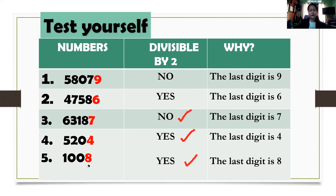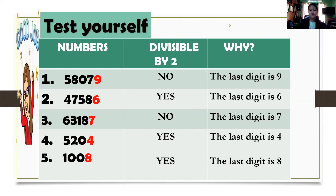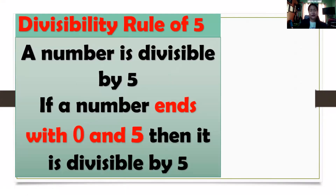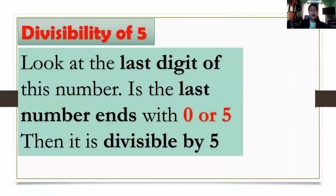Let us now proceed to another divisibility rule. Let's go to the divisibility rule of 5. A number is divisible by 5 if it ends with 0 or 5. For example, 195 — does the last digit end with 0? No. How about 5? Yes. So, 195 is divisible by 5 because the last digit ends with 5.